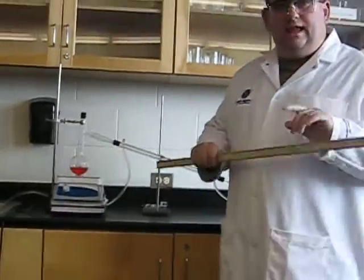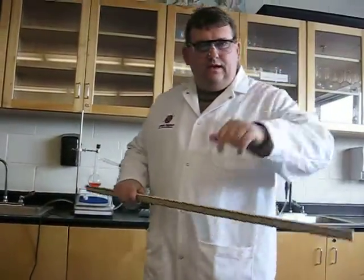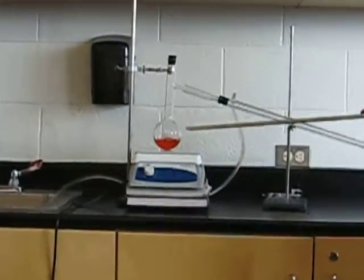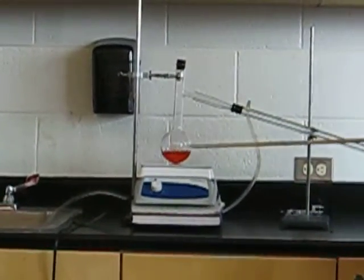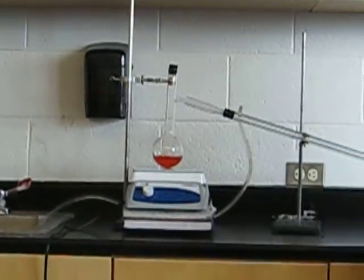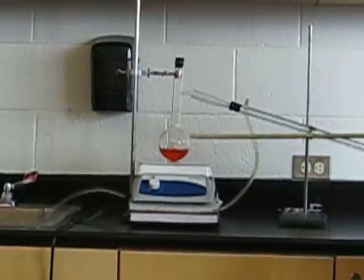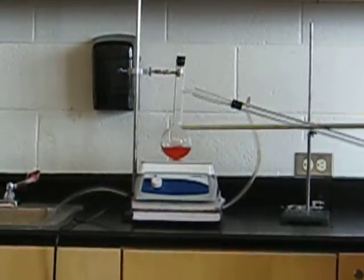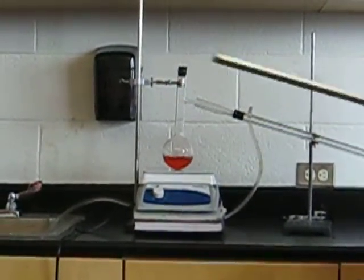The process of distillation is two steps. Step one, evaporation. In our flask, we have some nice orange Gatorade. As the Gatorade heats and boils, as we see here, it is boiling by the bubbles, and if we get a close-up of the flask, we will see the bubbles going up and down.